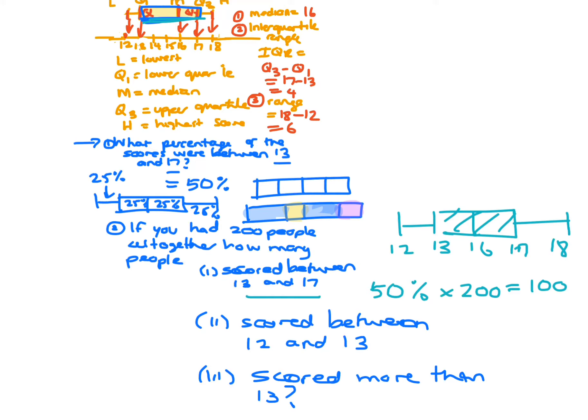So if you want to score between 12 and 13, so if you look at 12 and 13, that's just there. So that's just one quarter, or 25%. So if you find 25% of 200, a quarter of 200 is actually 50.